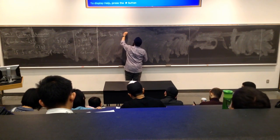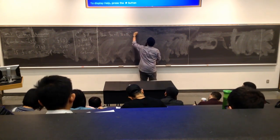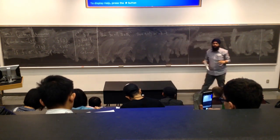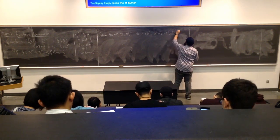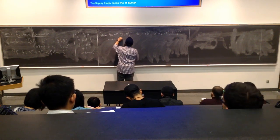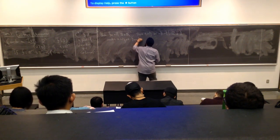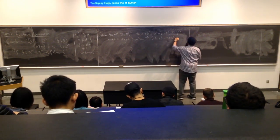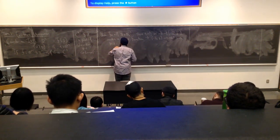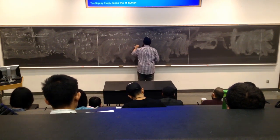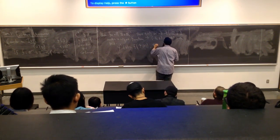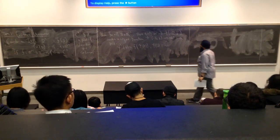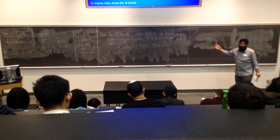Then for all initial points in R^n, there exists an interval — which I will denote as minus delta to delta — and a unique function called psi, that is mapped from this domain to R^n, such that psi is the solution to the initial value problem. In other words, if psi of t is my solution to my initial value problem, it exists on the interval minus delta to delta. So a solution exists, and it is unique within this interval.